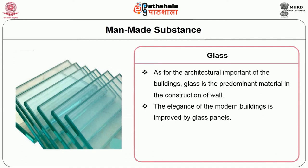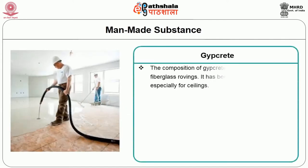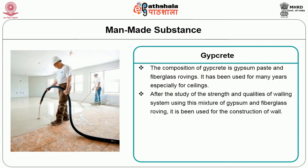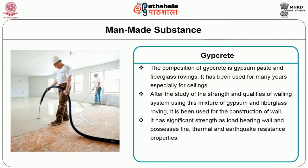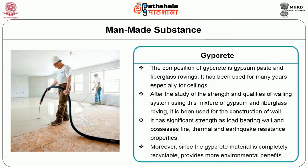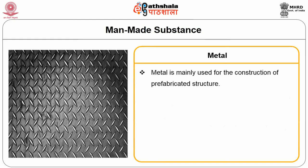Gypcrete is composed of gypsum paste and fiberglass rovings. It has been used for many years especially for ceilings. Using this mixture of gypsum and fiberglass roving, it is now being used for the construction of walls. It has significant strength as a load-bearing wall and possesses fire, thermal and earthquake resistance properties. Since gypcrete is completely recyclable, it provides more environmental benefits.